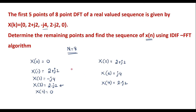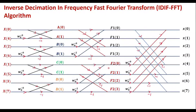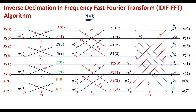Thus, we have found all 8 points of X(k). Now we need to find x(n) using the inverse DIF FFT algorithm. Let me draw the signal flow graph for the 8-point IDIF FFT algorithm. In this algorithm, the input sequence X(k) is in bit-reversal order, and the output x(n) is in normal order. Each output value must be multiplied by 1/N = 1/8.